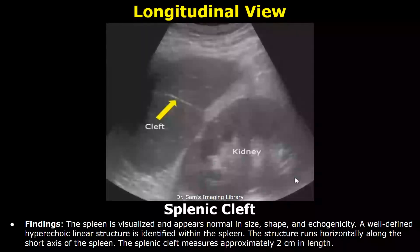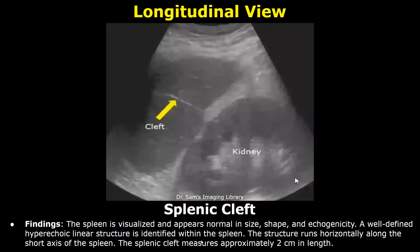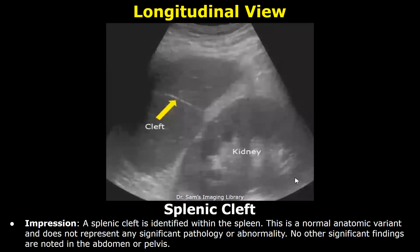In the case of splenic cleft, the spleen is usually normal in size and shape. A well-defined hyperechoic linear structure is identified within the spleen. This structure runs horizontally along the short axis of the spleen, and in the end the size of the splenic cleft is written. In the impression, a splenic cleft is identified within the spleen. This is a normal anatomic variant and does not represent any significant pathology or abnormality.